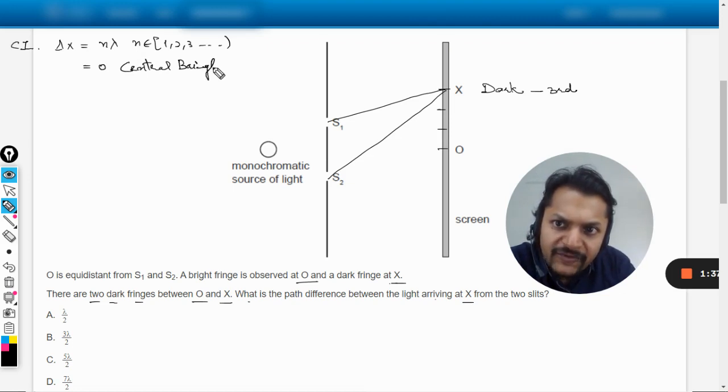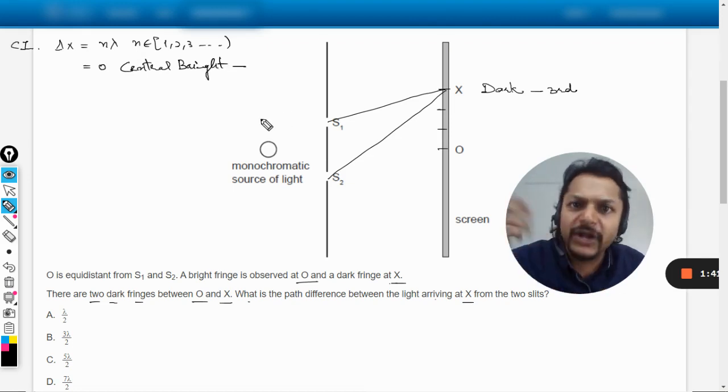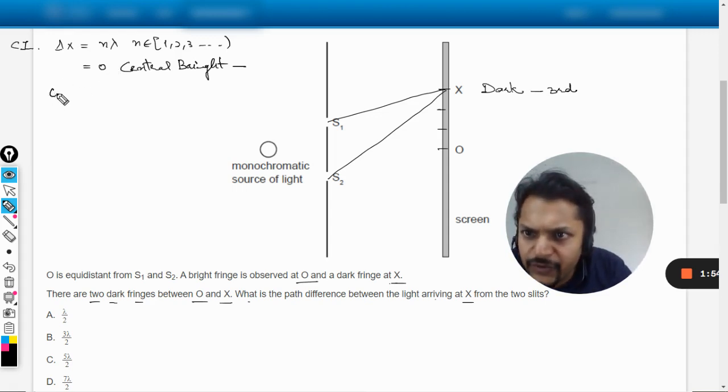I have created a different category for this because if you want the first bright, you substitute n equals 1. If you want fifth bright fringe, you just substitute n equals 5. Simple. And that is why I have deleted the 0 out of here.